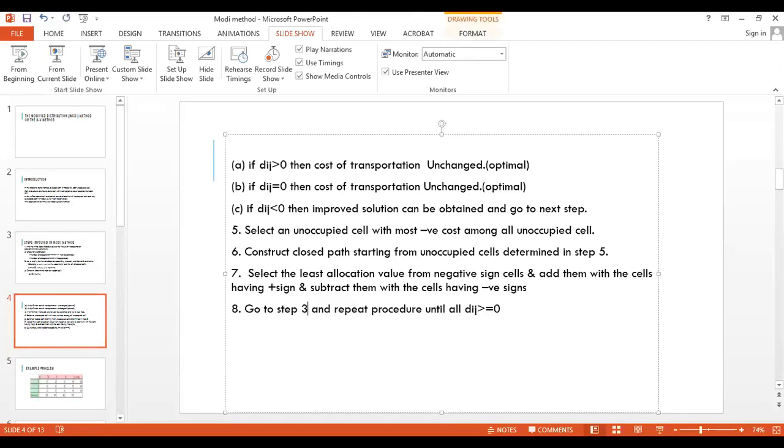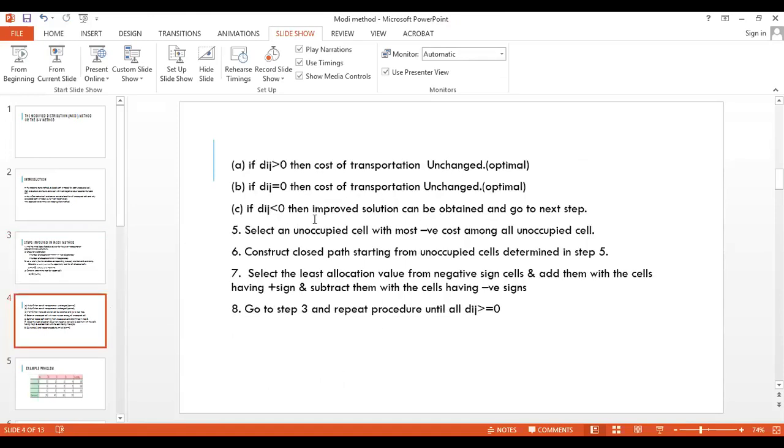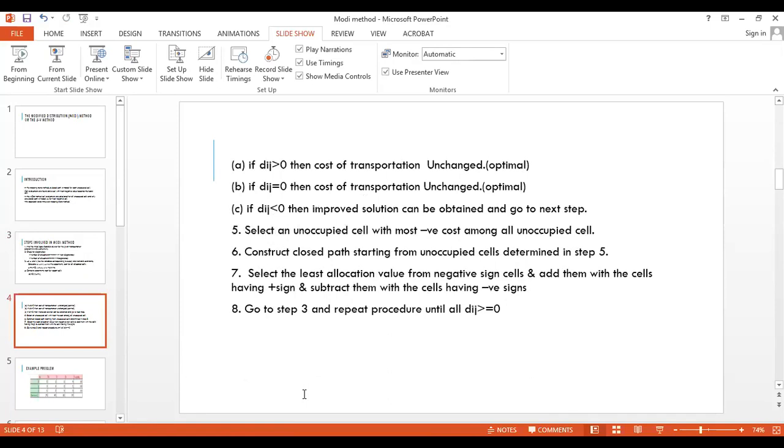So we have to go back to step 3 and repeat all the procedure. For every time we have to compute this for allocated cells and for unallocated cells. Once this value, after computing the costs for vacant cells, if there is any negative value we perform these three steps and then again we have to check. Again we have to compute for allocated cell, again we have to compute the net cost by using this condition. And again it is an iterative process. We have to keep on iterating as long as dij becomes positive.